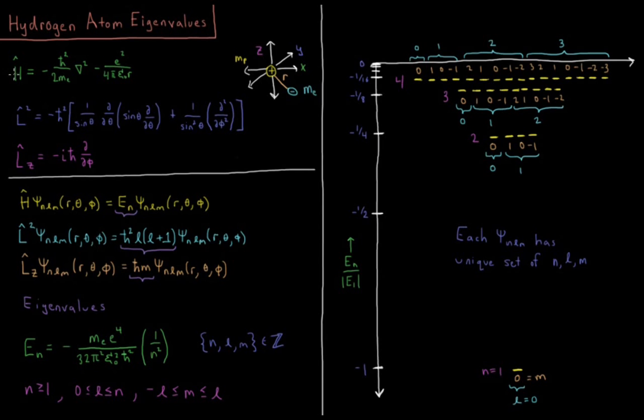So the hydrogen atom atomic orbitals, the wave functions of this model system, those are eigenfunctions of the Hamiltonian operator. So H psi equals E psi, but they are also eigenfunctions of two additional operators.